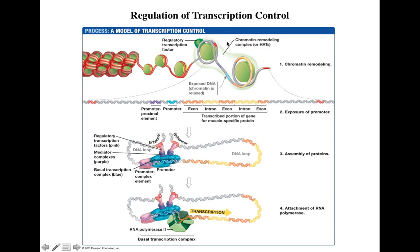Chromatin remodeling complexes can either modify histone proteins or kick them out entirely so that the DNA can be relaxed. This exposes all regulatory sequences — including enhancer regions and the promoter region — to the transcription machinery. Once the chromatin is remodeled and relaxed, the second step is exposure of the promoter.